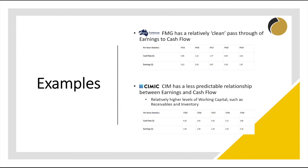This potential divergence between cash flow and earnings can be demonstrated with a couple of examples from the ASX. On the one hand, iron ore miner Fortescue Metals Group displays relatively clean pass-through of earnings to cash flow — we can see that the two figures have moved broadly in tandem over the past five years. In contrast, contractor Simic Group has relatively high levels of working capital, such as receivables and inventory. As a result, its cash flow and earnings display a less predictable relationship to each other than in the case of Fortescue.